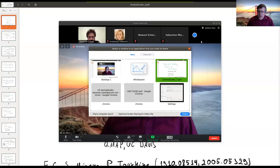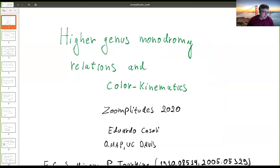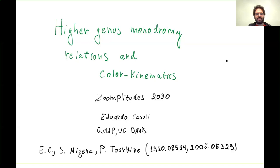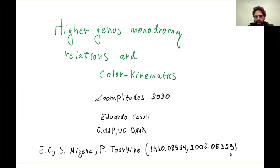Eduardo Casali is going to tell us about higher genus monodromy relations and color-kinematics. Thank you to the organizers for organizing this conference and for inviting me to give a talk. This is a continuation of work I've been doing with Sebastian and Piotr, and in particular what I'm going to talk about is a paper that came out earlier this week. I'll try to keep this a bit light on the technical details.